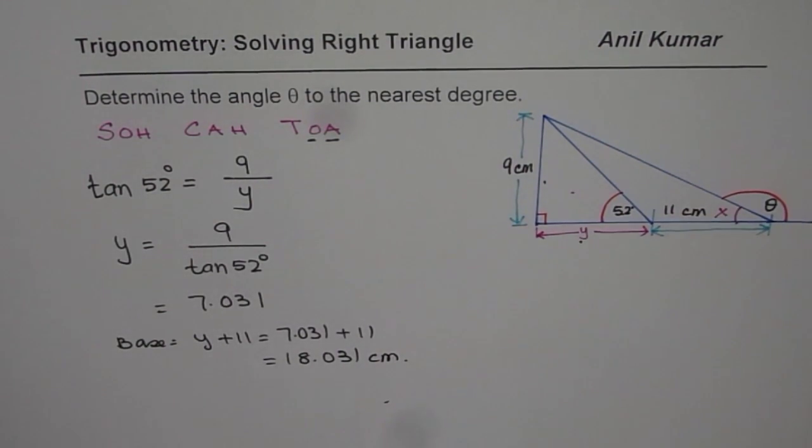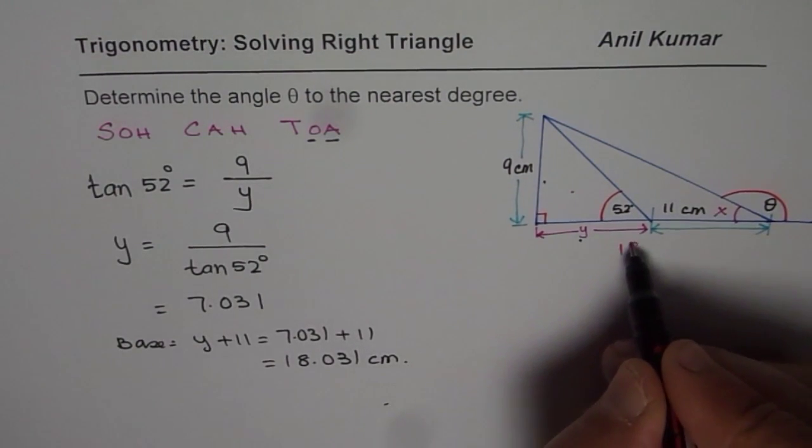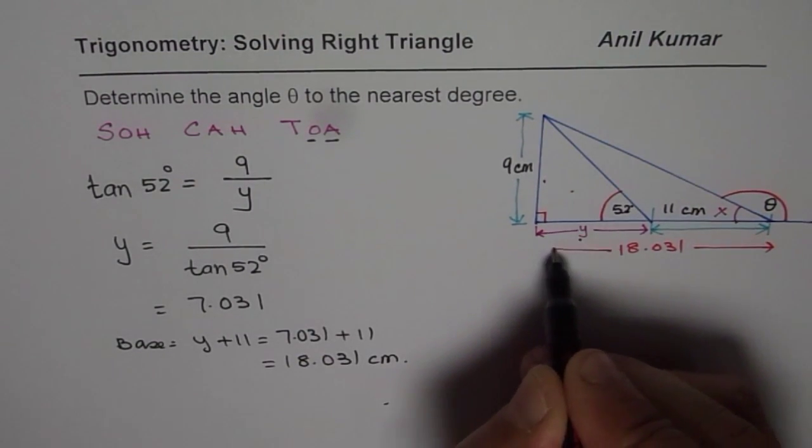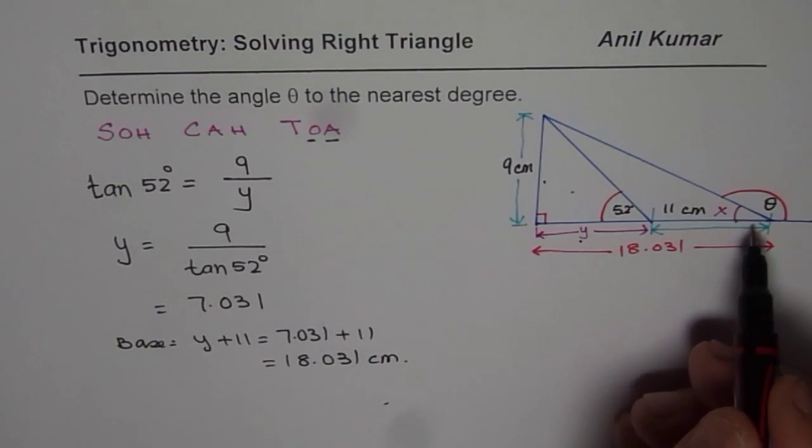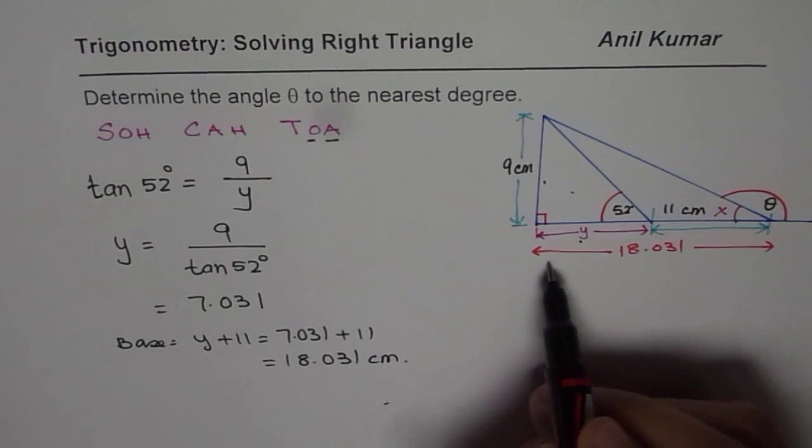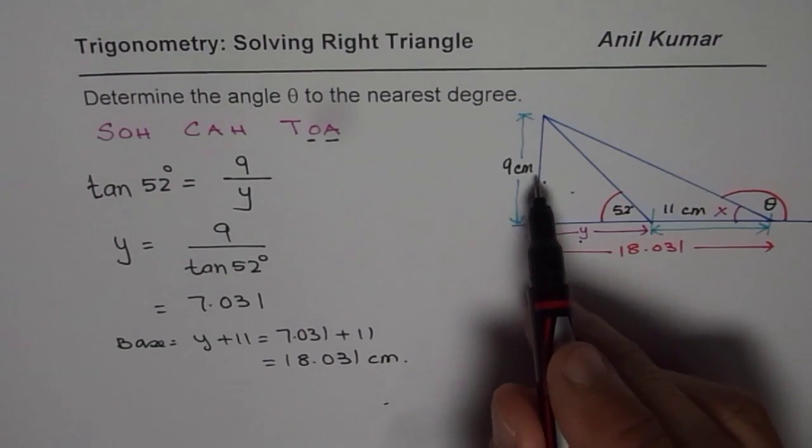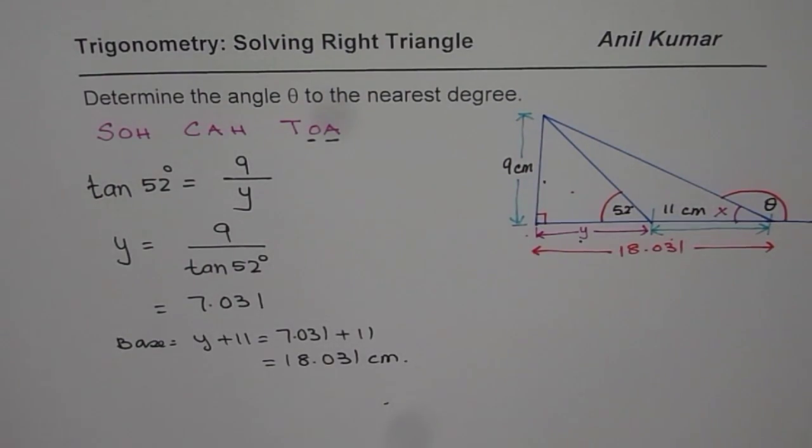So we know this length. So I will just write down the length there. So this length is 18.031 total length. Since we know the length and the opposite side, we can find the angle x again using tan, opposite over adjacent. Is that okay?